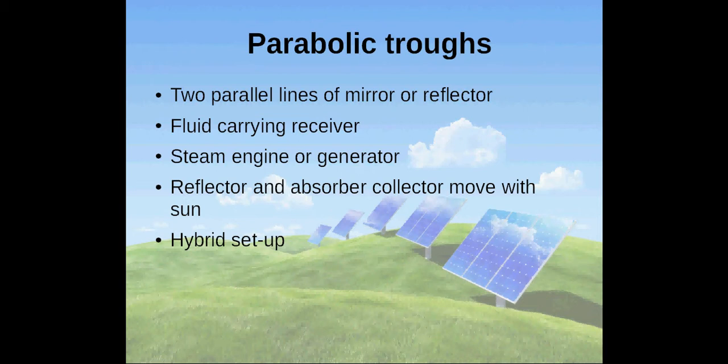The tubes or absorber collectors are generally made of stainless steel and coated with a selective coating. Both the reflector and absorber collector move with the sun as it crosses the sky. This ensures that the sun is continually focused on the receiver.